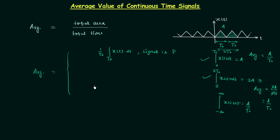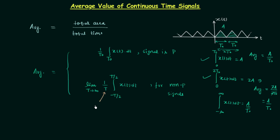Now we will move to the formula for average value when the signal is non-periodic. The formula is: limit as T tends to infinity of 1 over T, integration from minus T/2 to T/2 of x(t) dt. The time T here is not the period — this is the first confusion you will have when you see this formula. As we are talking about non-periodic signals, there is no concept of period; the period is undefined for non-periodic signals. So this time T is simply the time.